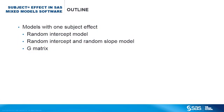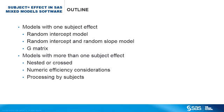I will start with models with one subject effect. Examples will include a random intercept model and a random intercept and slope model. This will lead to a closer look at the G matrix. Then I will talk about models with more than one subject effect. Issues include whether you should specify the subject effects as crossed or nested, how you specify the models so they are more numerically efficient, and what it means to make the model processed by subjects.